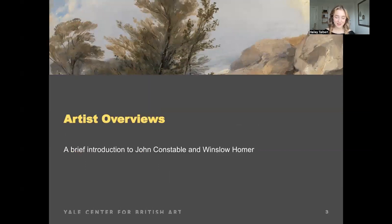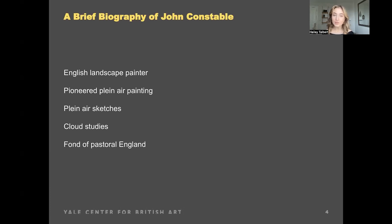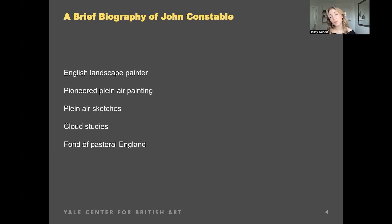John Constable was an English landscape painter in the Romantic tradition who lived from 1776 to 1837. Constable pioneered an artistic practice called plein air painting, the subject of this tour. Plein air is essentially the act of painting outside, and it can take many forms, such as oil paint or watercolor, at various stages of the painting process.